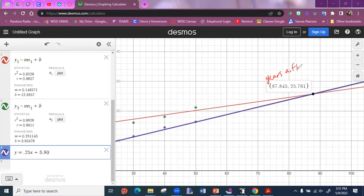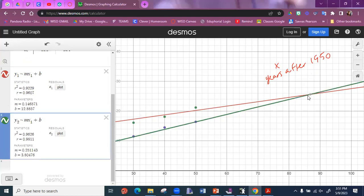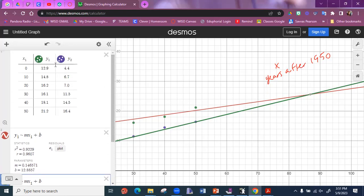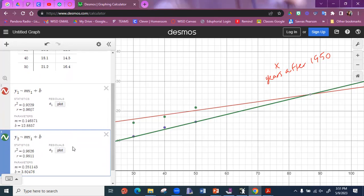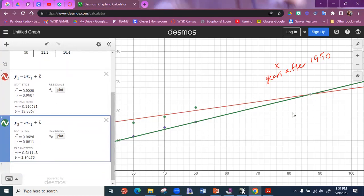X represents the years, but the year is what? Perfect. It's the years after 1950. That's what your X represents. So the X represents your years after 1950. And the Y represents the population of both, right? So that equals your population of both cities.